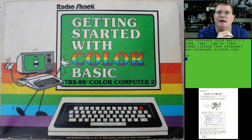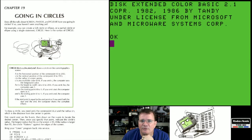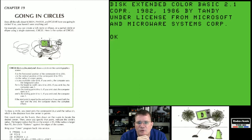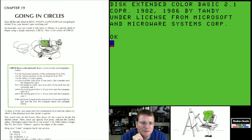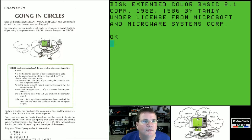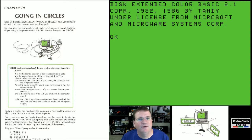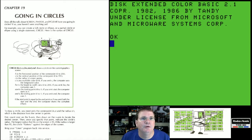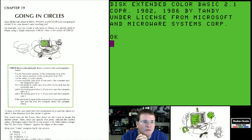We're back in Programming in BASIC, and we're in Chapter 19 — we're going to go over the CIRCLE command. Chapter 19 is called 'Going in Circles.' We're going to learn about a command that allows you to draw circles on your screen. I've gone back to using VCC with a real PC keyboard, which is easier to type on. You can create a full circle, ellipse, partial circle, or partial ellipse using a single CIRCLE statement.